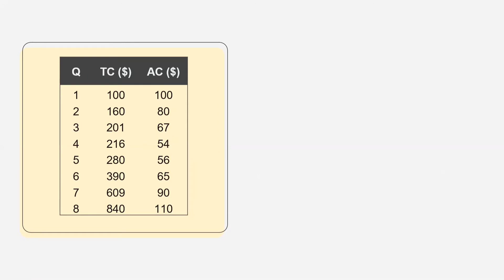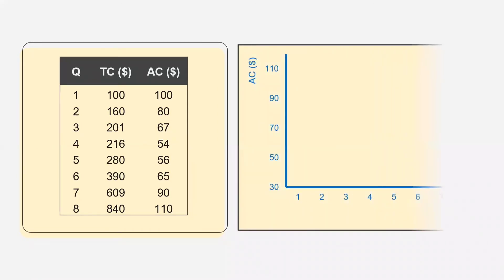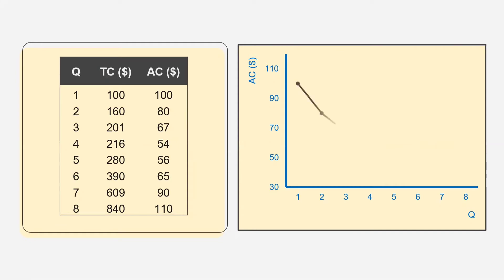Let's draw a diagram of the average cost curve. Here we have quantity on the x-axis and average cost on the y-axis. If we draw the average cost curve, we can see that initially it is downward sloping. After reaching the minimum point, it starts increasing and therefore we have an upward sloping curve. So the average cost curve is U-shaped.